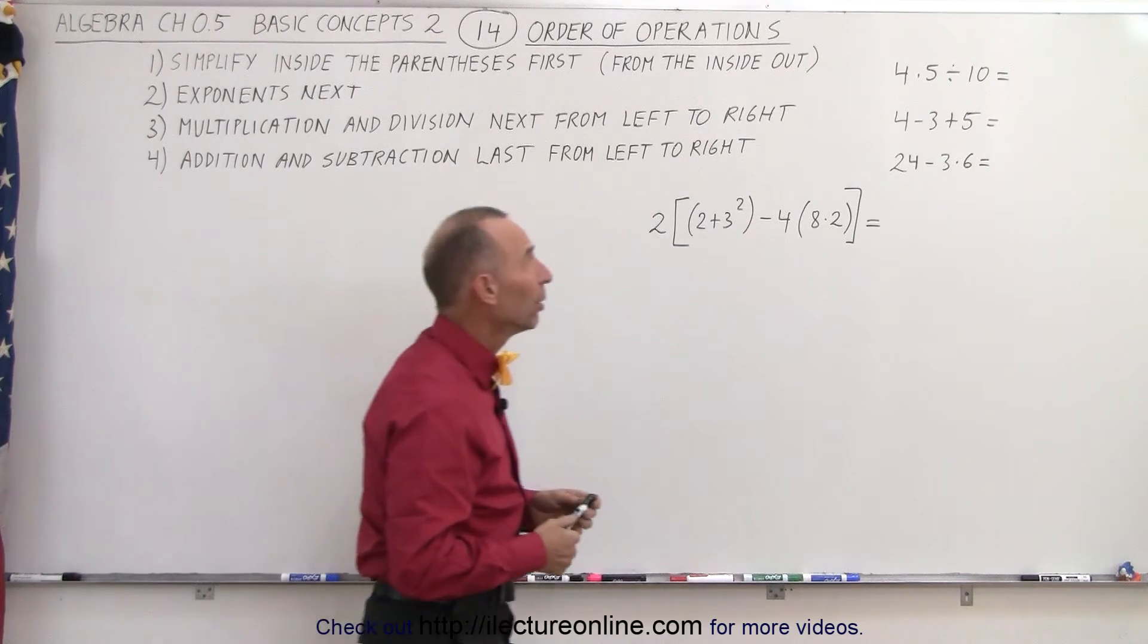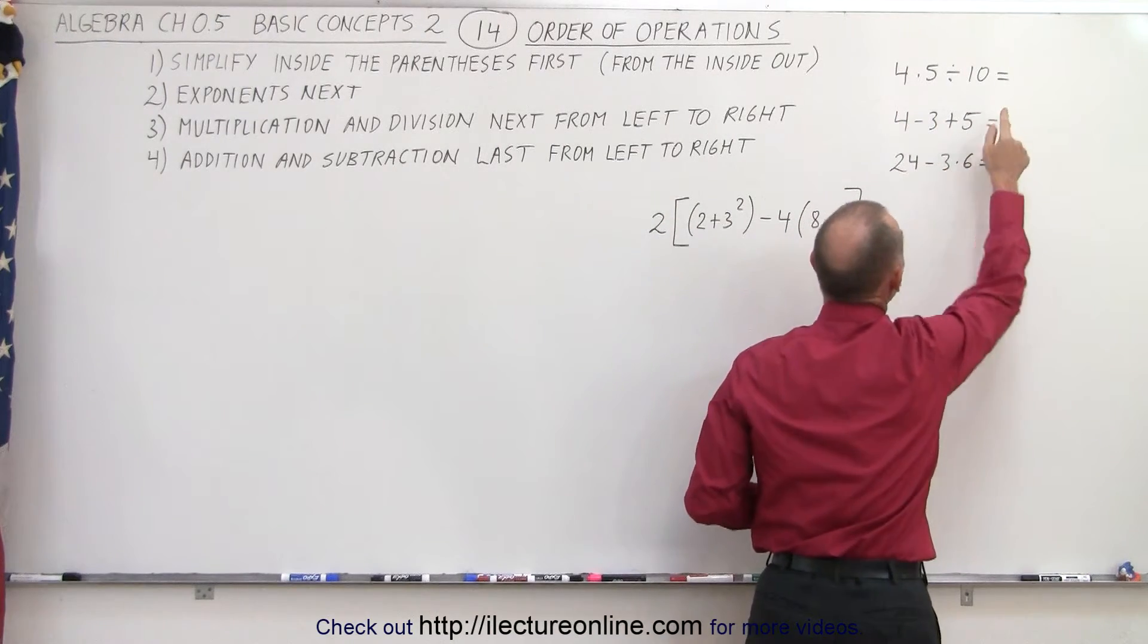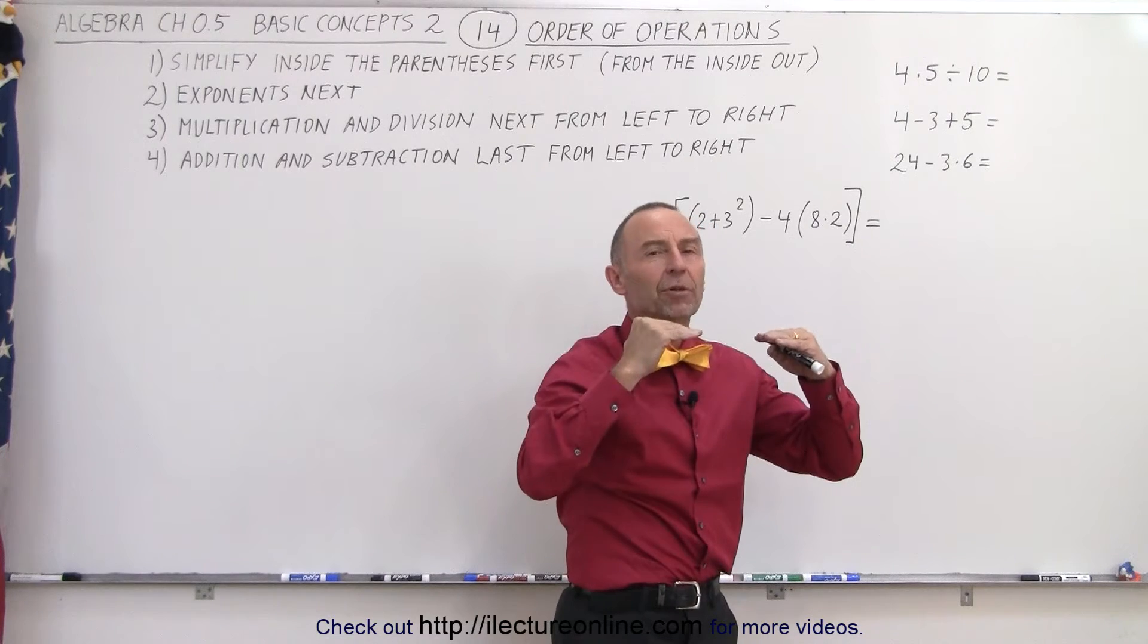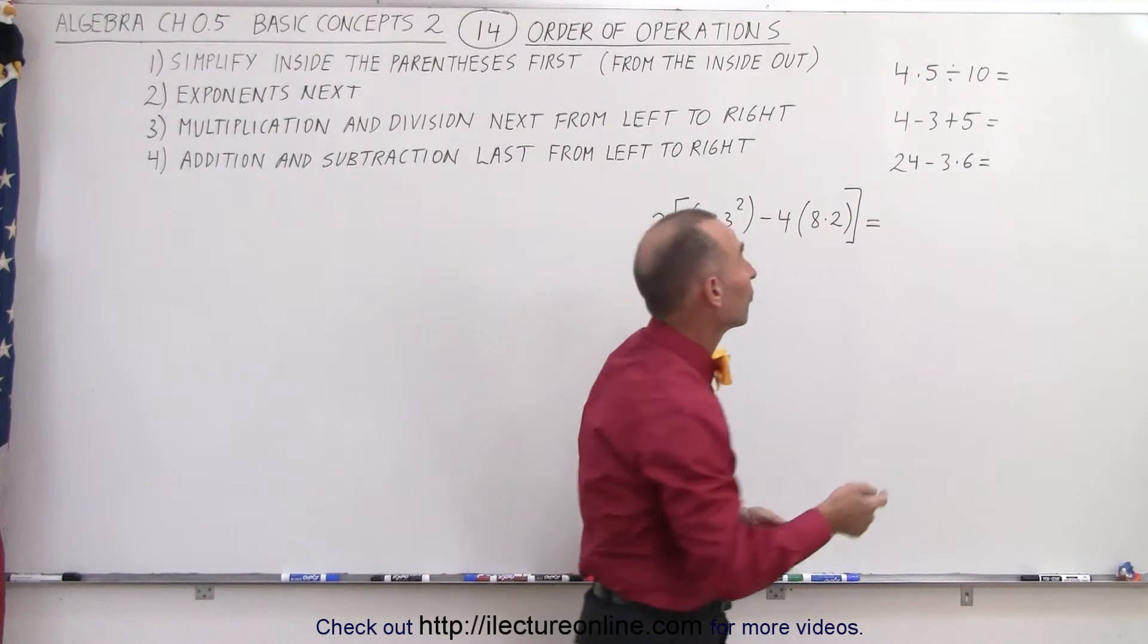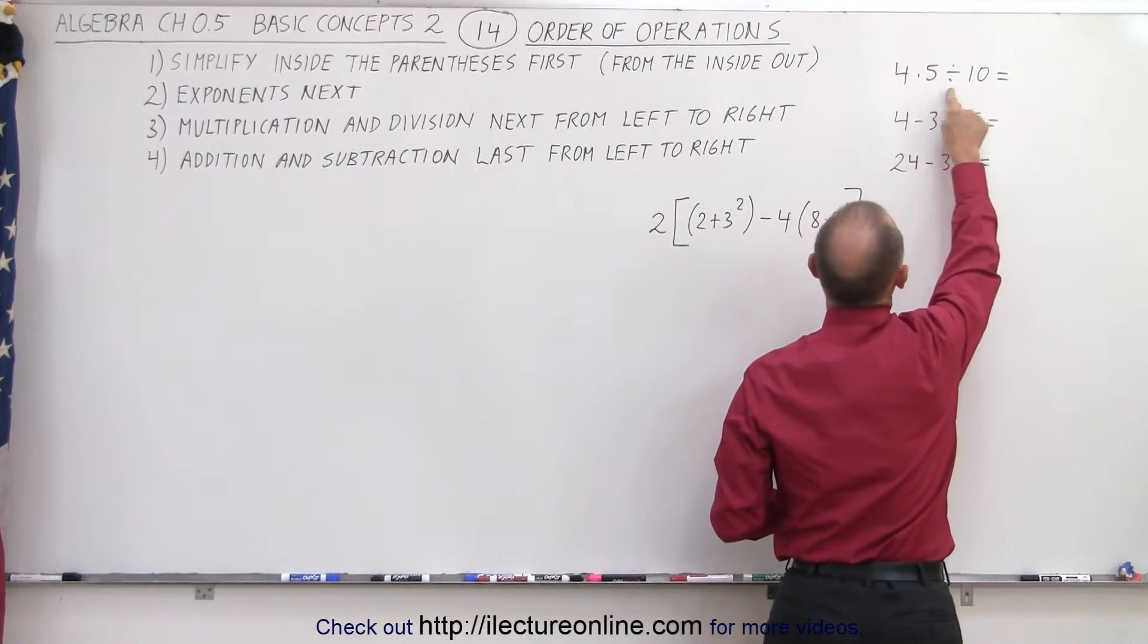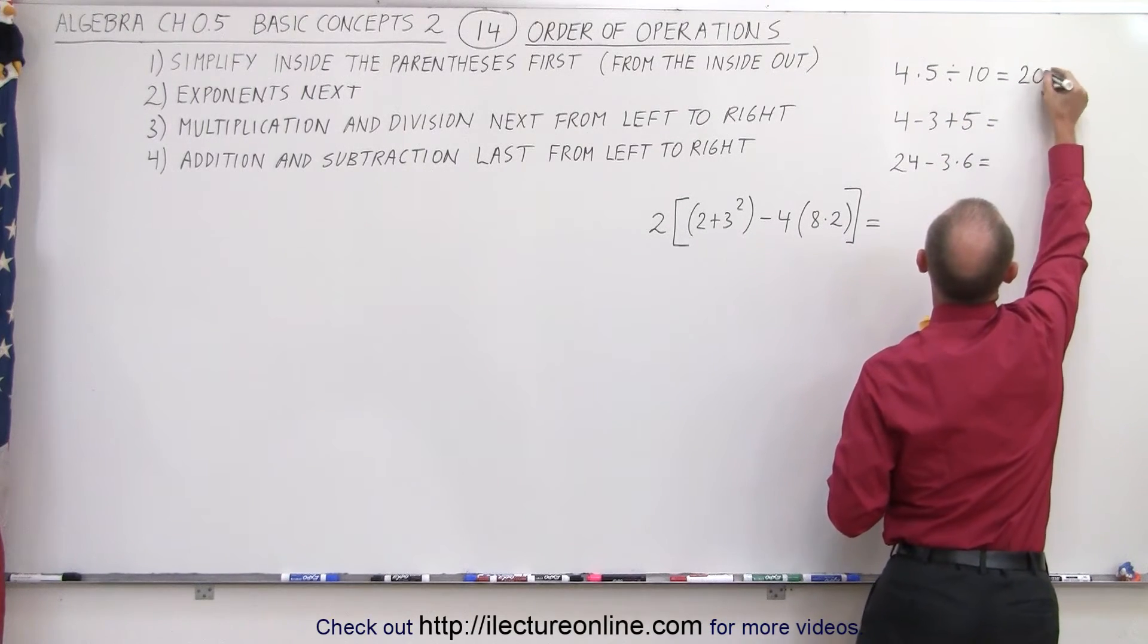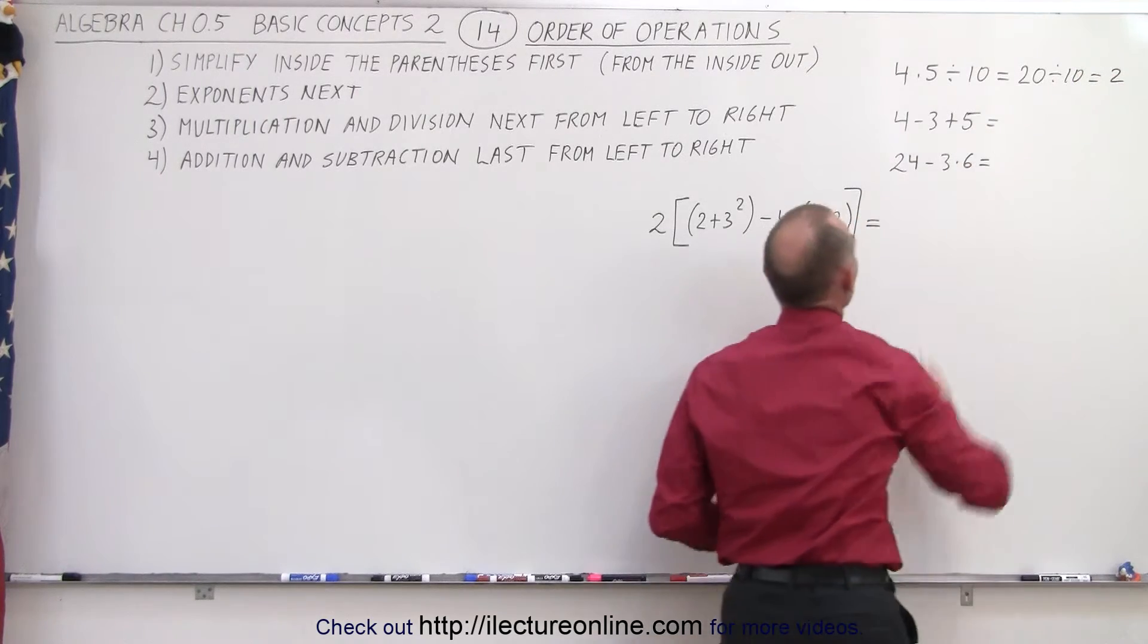Some simple examples up there. We have 4 times 5 divided by 10 equals. So notice that multiplications and divisions are at the same level. Since they're equal in priority, we must work from the left to the right. So we first take 4 times 5, which is 20, and divide by 10. So we have 4 times 5, which is 20, divided by 10, which is equal to 2. That's the proper way to do it.